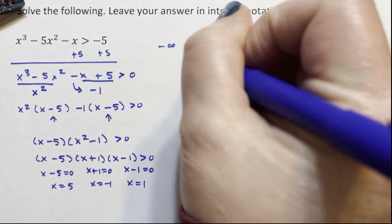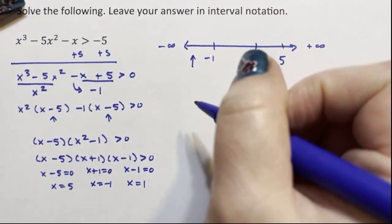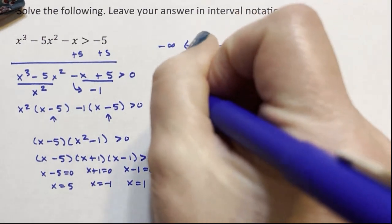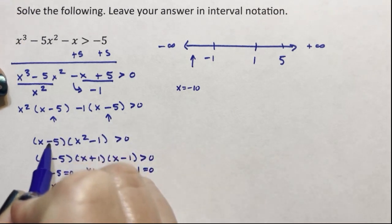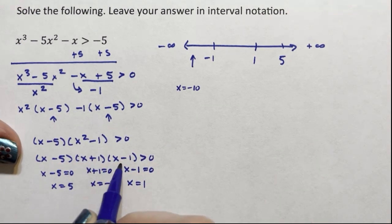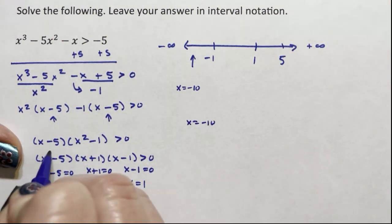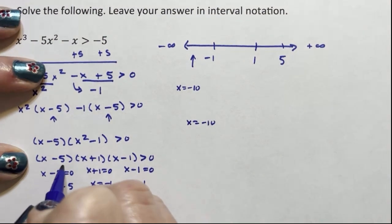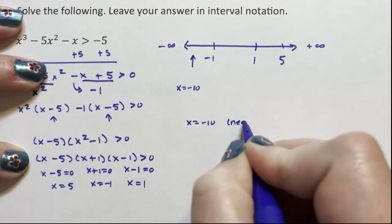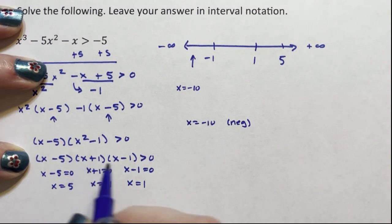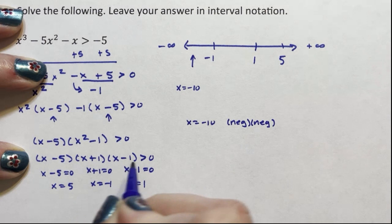I am going to take a number in this first interval, and I'm just going to take any number such as x equals negative 10. And if I take x equals negative 10, I'm going to look at these three factors. And so negative 10 minus 5 is negative. And that's all I'm really looking at is if it's negative or positive. Negative 10 plus 1 is also negative. And negative 10 minus 1 is negative.